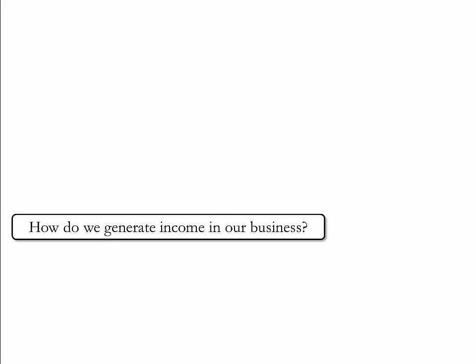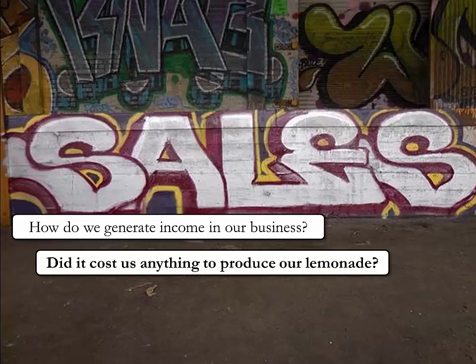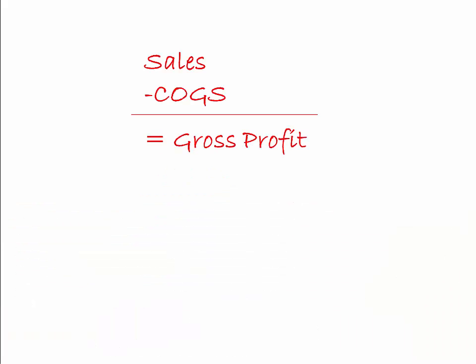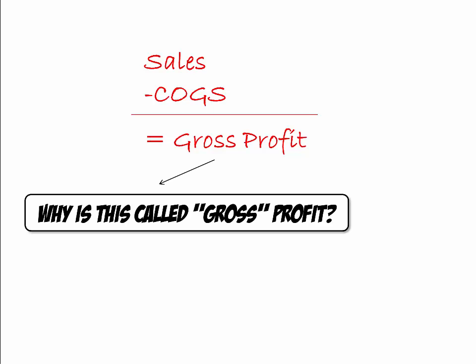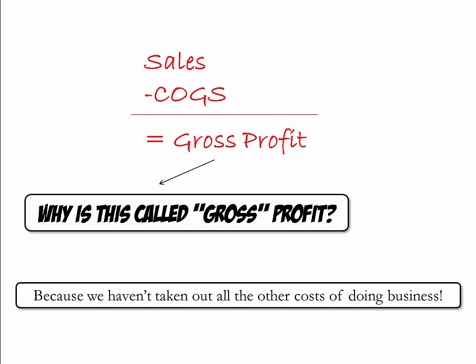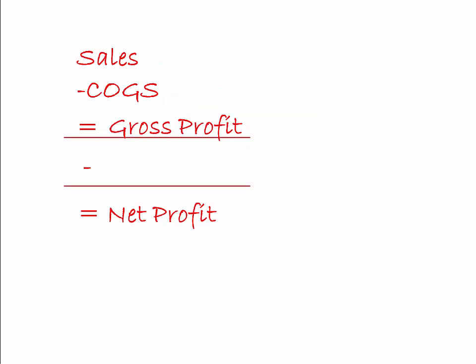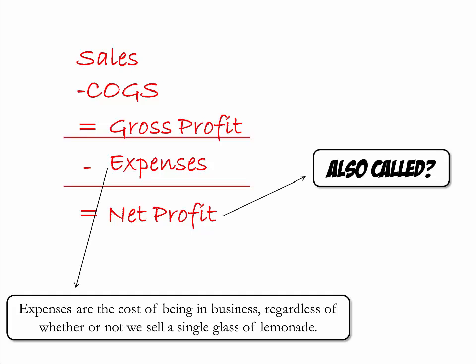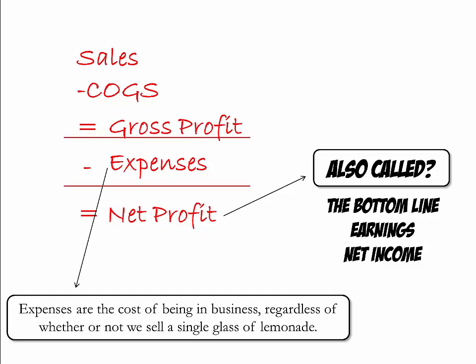How do we generate income in our business? Through sales. Did it cost us anything to produce our lemonade? It sure did. We call these costs cost of goods sold, or COGS. When we subtract COGS from our sales, we get gross profit. We call it gross profit because we have other costs beyond just the costs to produce our lemonade. To get from gross profit to net profit, we subtract our expenses — the cost of being in business regardless of whether or not we sell a single glass of lemonade. Other names for net profit include the bottom line, earnings, and net income.